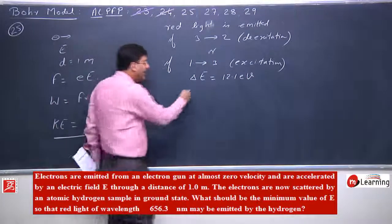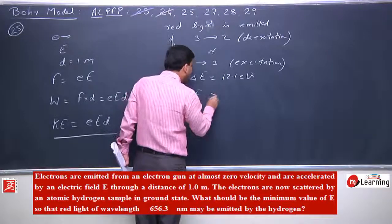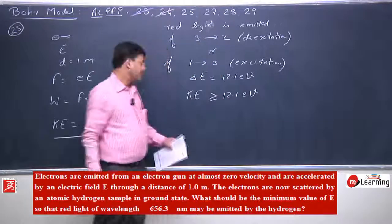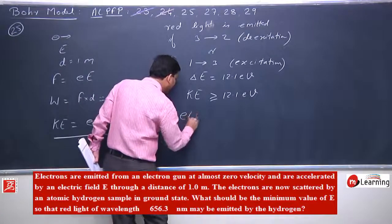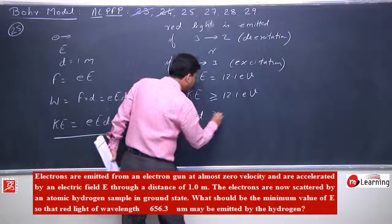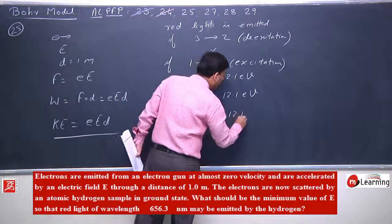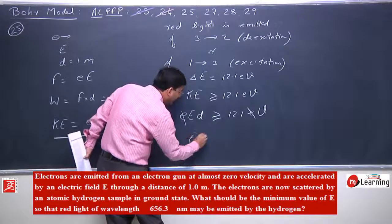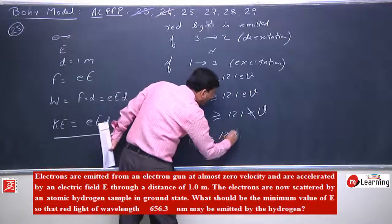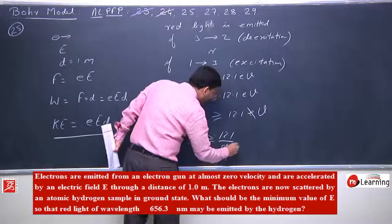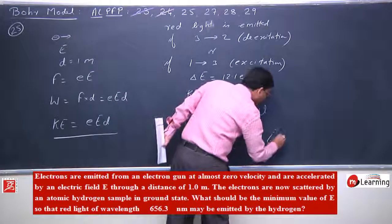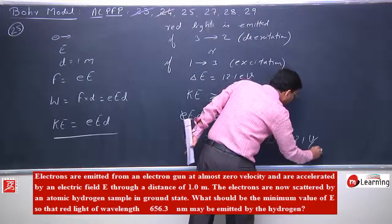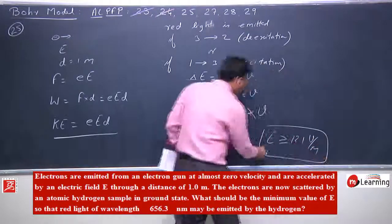Kinetic energy must be greater than or equal to 12.1 eV. Now, kinetic energy is eEd, and this must be greater than or equal to 12.1 eV. The charge e cancels, so E must be greater than or equal to 12.1 divided by d, and d is 1 meter. Therefore E must be greater than or equal to 12.1 V per meter.